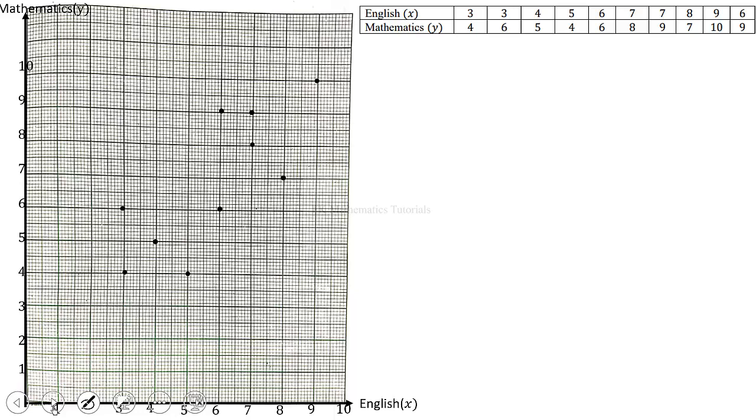You know how to plot points already. To plot the point 3, 4, you locate 3 on the x axis and trace it to where it will meet 4 on the y axis. So trace this and trace this. It will meet here. So that is how you plot the point.